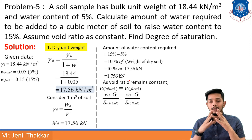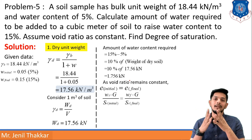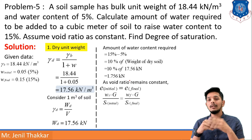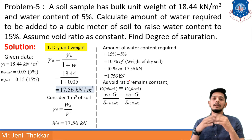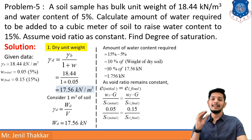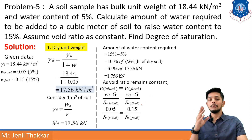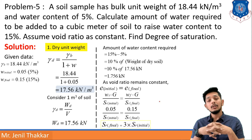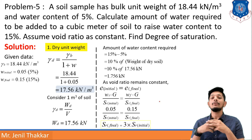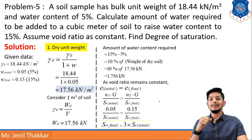The value of G will be constant as the soil is the same, but W and SR will differ as W_initial/W_final and SR_initial/SR_final. From the relationship using W_initial and W_final, I get SR_final = 3 × SR_initial. So the degree of saturation will be 3 times the initial saturation. That's it for this problem. Let us move to the next problem.